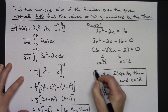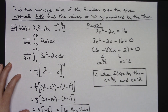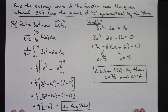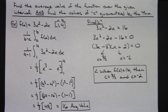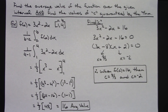So that's one example of the average value theorem worked out — finding the average value and then finding the actual values of c guaranteed by the theorem. Just one quick example and a good definition of the mean value theorem for integrals. Thanks for watching, and if you liked the video, go ahead and give me a thumbs up and share with your friends.